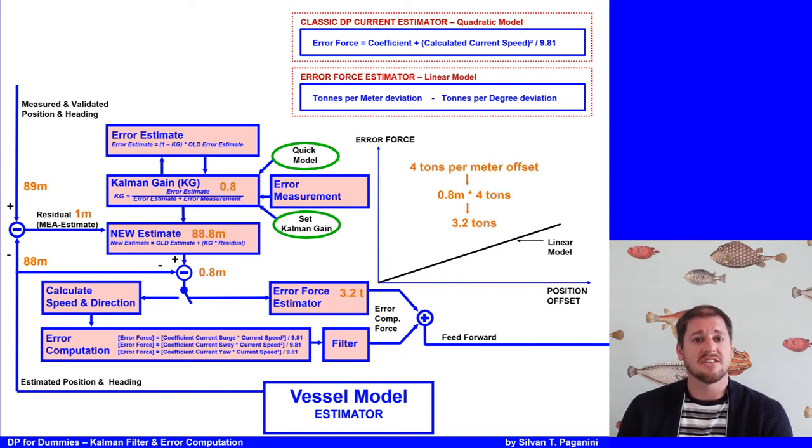So, in our previous example with the residual of 1 meter, the Kalman gain is increased, let's say to 0.8. So, the new estimate is then 0.8 meters away from the old estimate. And since the error force estimator is used, linear, let's say 4 tons per meter offset, 3.2 tons error force is applied. 4 tons multiplied by 0.8 equals 3.2 tons. It's feed forward to the thrust allocation without the filter and therefore without delay. The vessel reacts promptly.